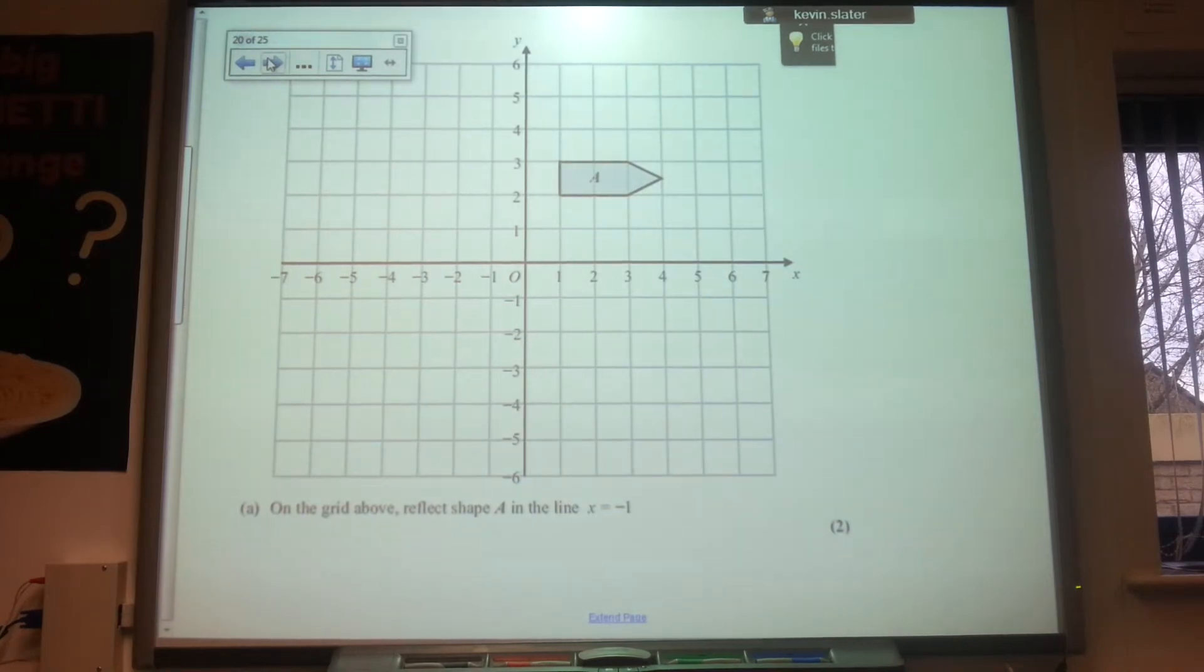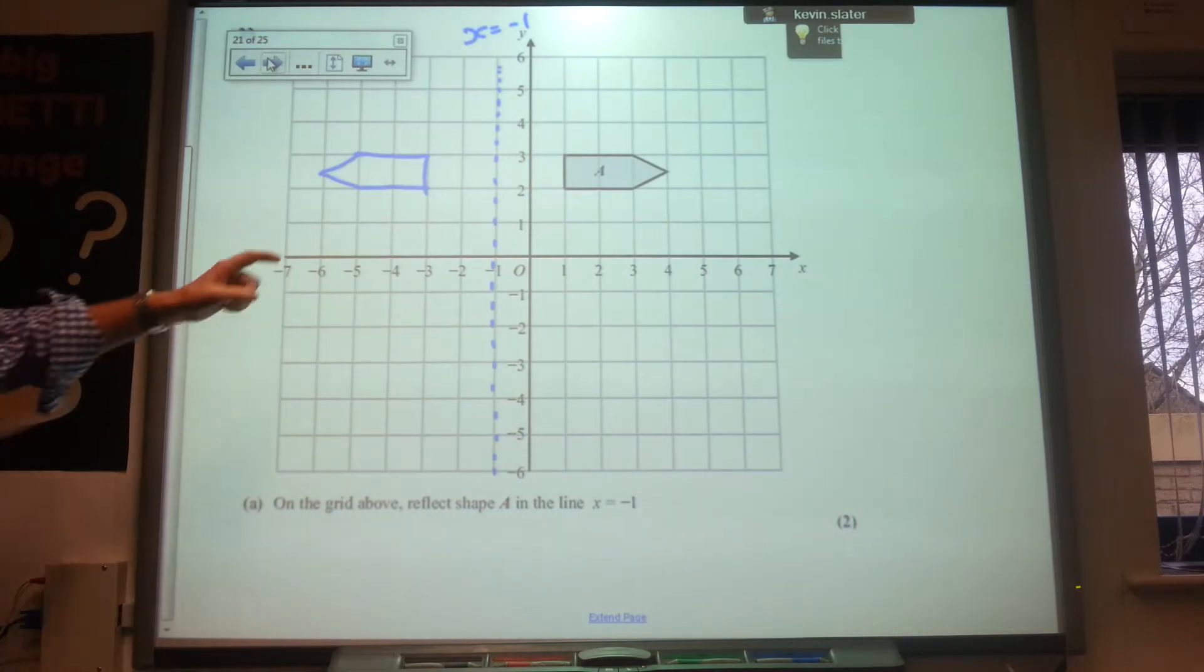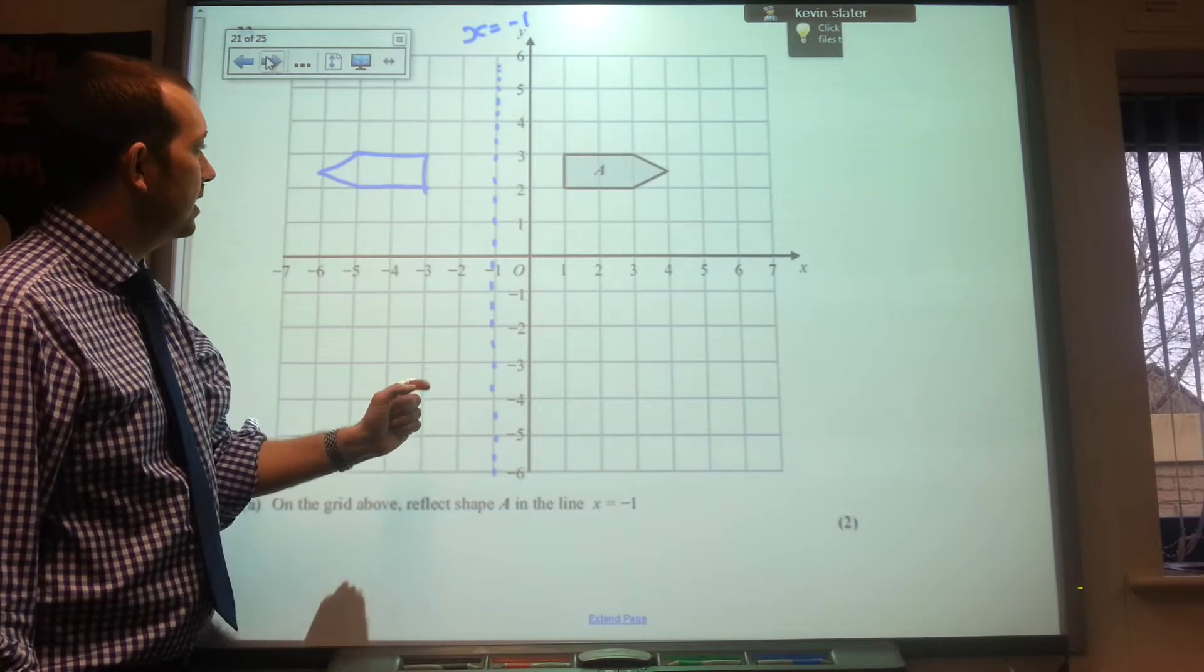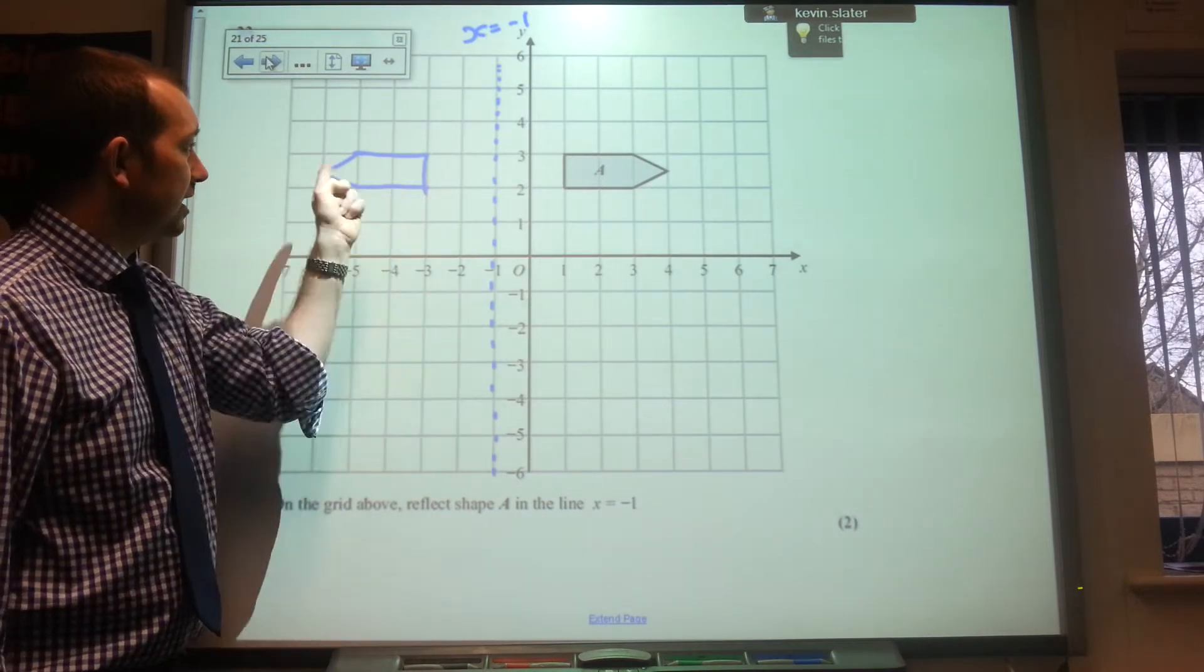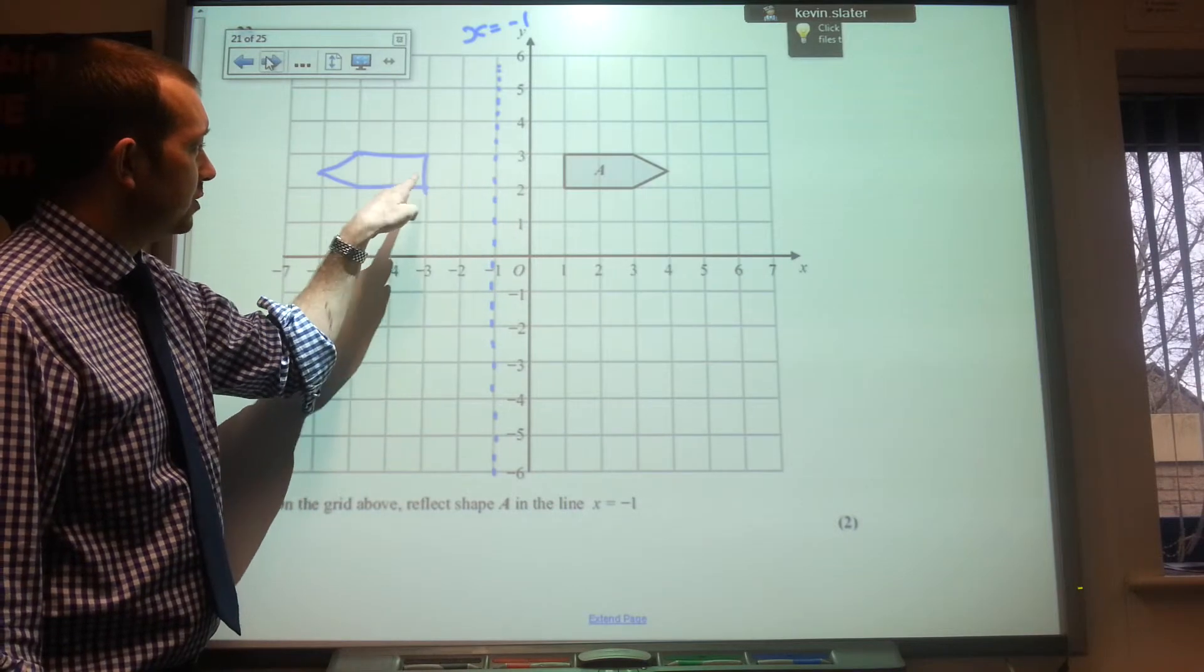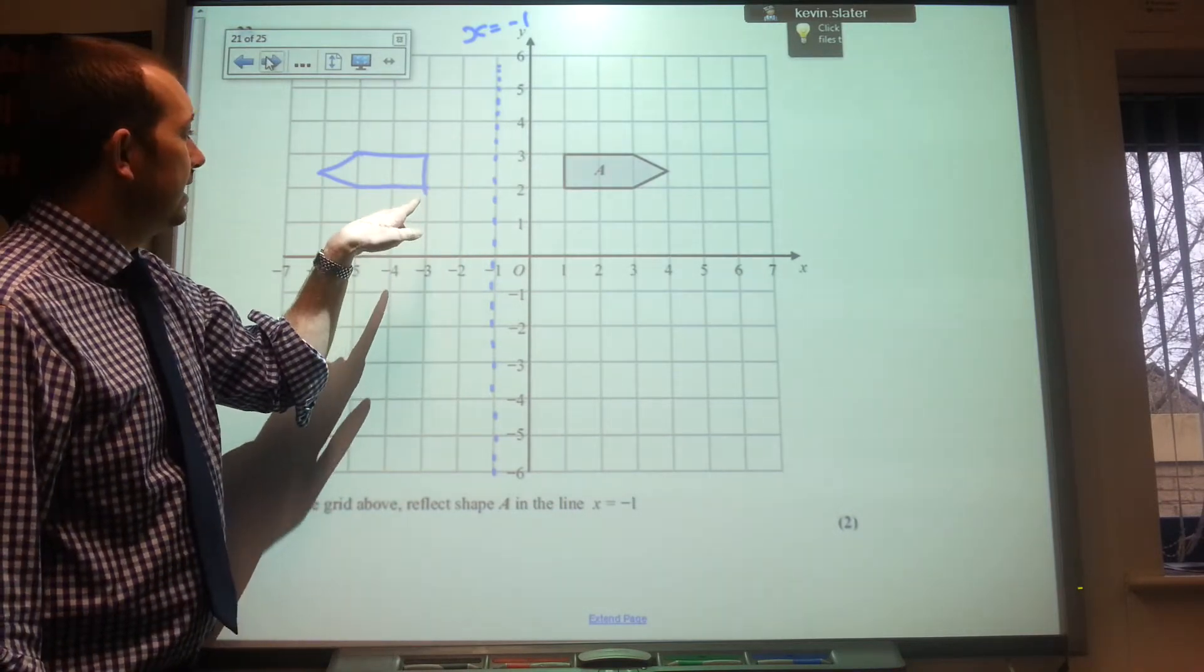On the grid, reflect shape A in the line x equals minus one. So your first job here is to identify the line x equals minus one and draw that on. And then you need to reflect the shape in that line. So it's two squares away there, so it needs to be two squares away that side. Okay.